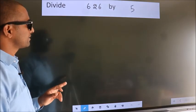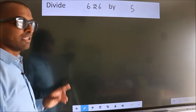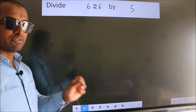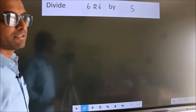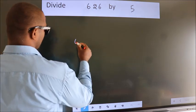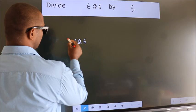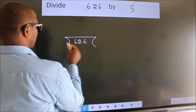Divide 626 by 5. To do this division, we should frame it in this way. 626 here, 5 here.